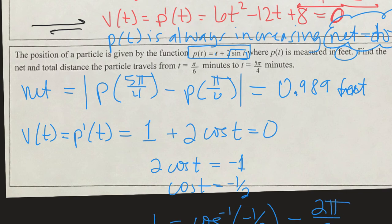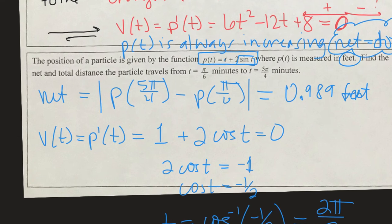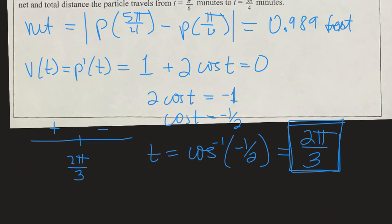So sure enough, our particle changes directions—it's 0 at 2π/3. So we can do a sign analysis: 2π/3, and to the left of 2π/3 we find out that it is positive on the left and negative on the right. So sure enough, it does change direction. Our formula to find the total is going to be the absolute value of 2π/3